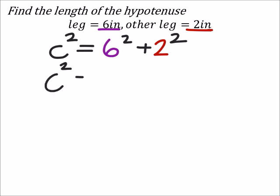So evaluating this, I got C squared equals six squared is 36. Then I'm going to add this to two squared, which is four.